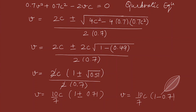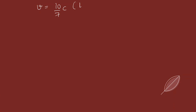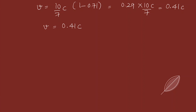Since the velocity cannot be greater than the speed of light, we take the minus sign: v = (10c/7)·(1 - 0.71) = (10c/7)·0.29 ≈ 0.41c. The velocity of each spaceship as observed by the stationary observer on Earth is 0.41 times the speed of light.